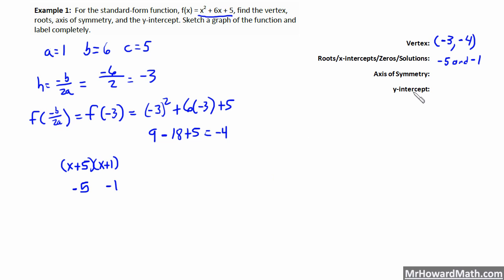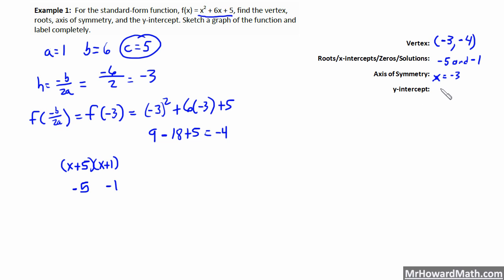Our axis of symmetry is X equals the X coordinate of our vertex, which we've already found. So that's X equals negative 3 — a vertical line at negative 3. Our Y-intercept is simply the C value, which is 5. We could also write it as the point (0, 5).